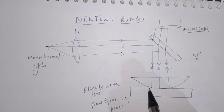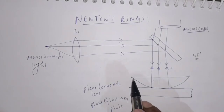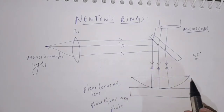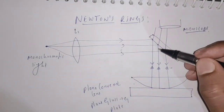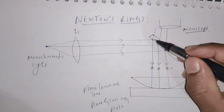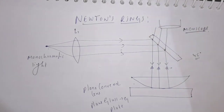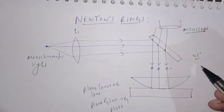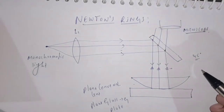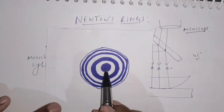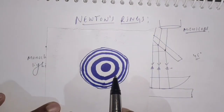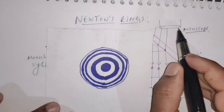Because of this wedge-shaped film, rings are formed. If you observe this reflected light in the microscope, we are going to observe alternate dark and bright fringes.